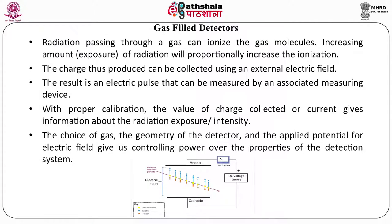For a gas-filled detector, if you fill gas in a container, radiation passing through the gas can ionize the gas molecules. Increasing the amount of radiation will proportionally increase the ionization. The charge produced due to ionization can be collected using an external electric field — for example, with a cylindrical container, you apply a voltage between the outer wall and a central electrode. The charge, depending on its polarity, goes to different electrodes, and the result is an electric pulse measured by an associated measuring device. With proper calibration, the value of charge or current gives information about radiation exposure or intensity.